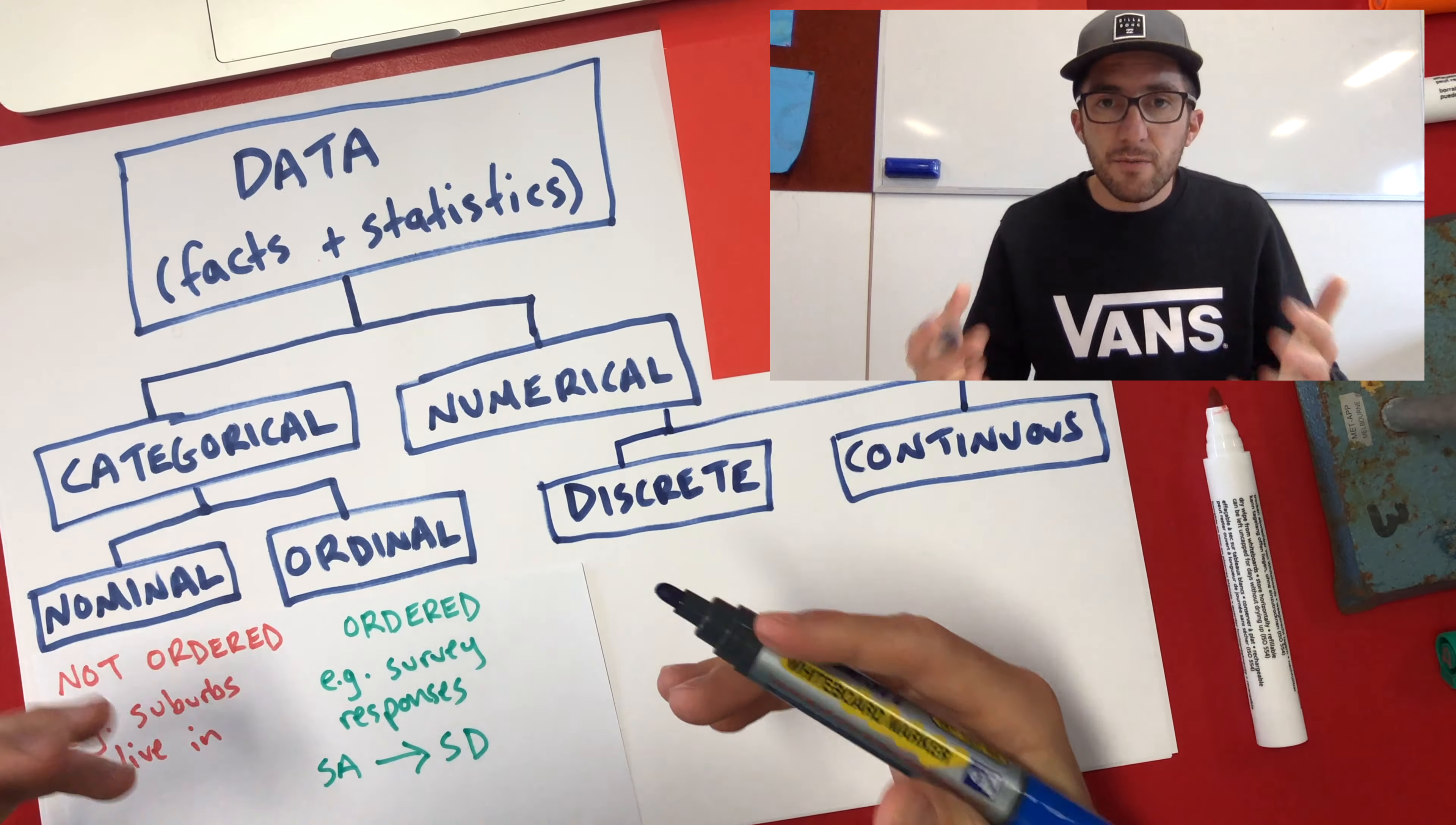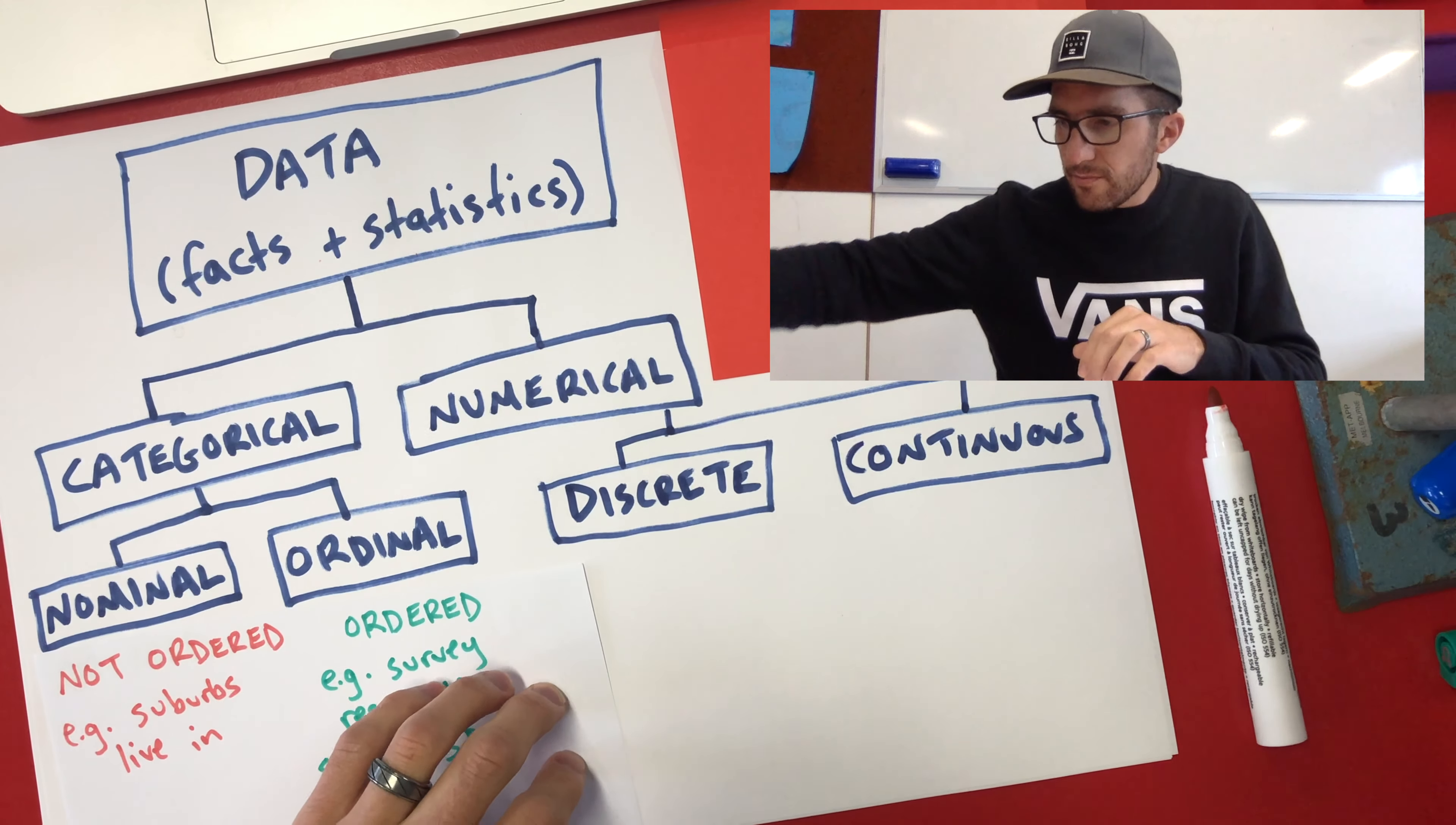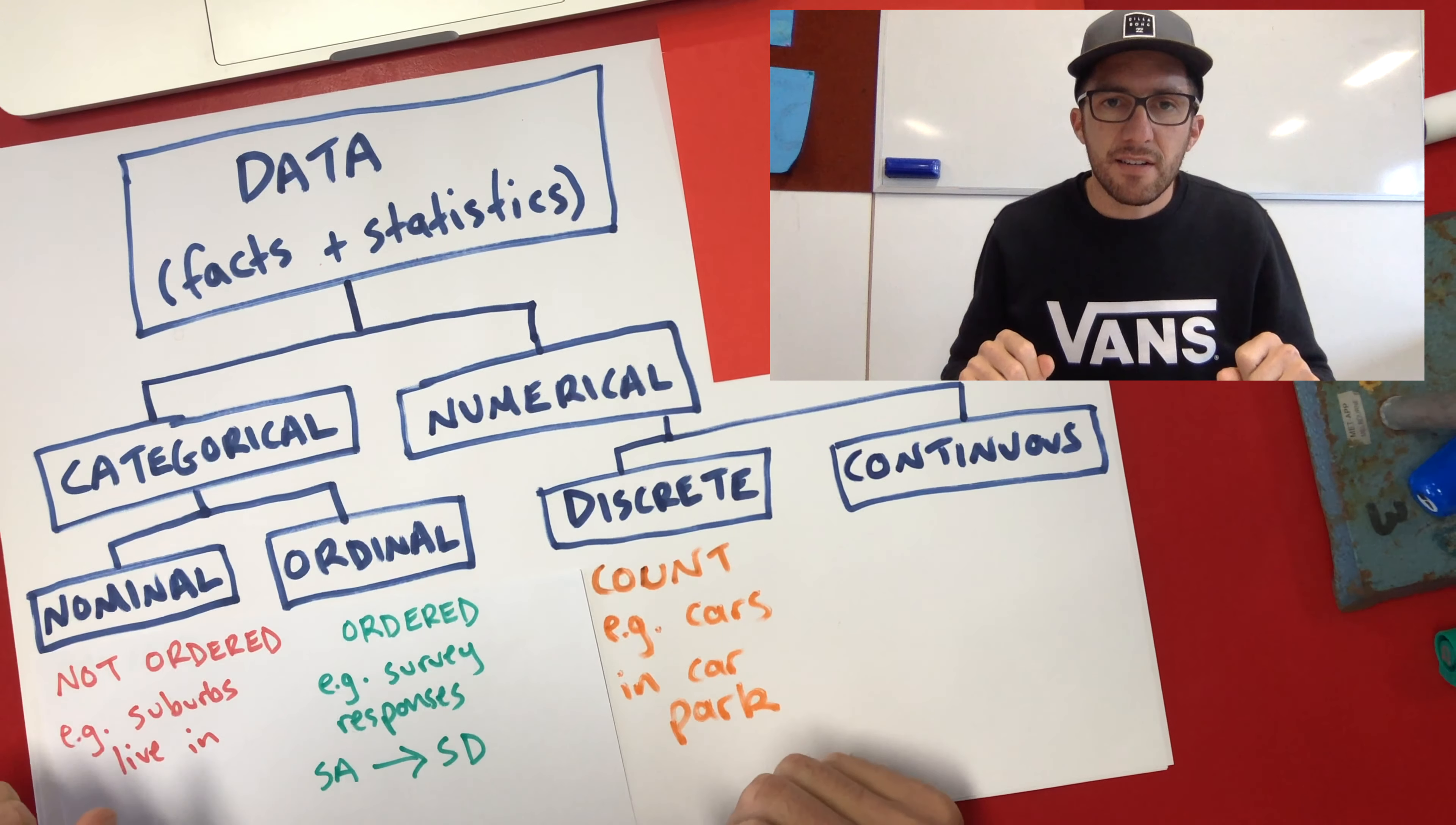So with discrete data, that's data that we count. And the discrete part of the name sort of means you're locked into certain numbers that you can choose. So if we're doing a survey of how many cars are in the staff car park, we only have certain numbers that we can have as our answers, like one car, three cars, ten cars, and so on. We can't have two and a half cars. We can't have 3.57 cars. We're locked into those whole numbers. So discrete data is data that we count. So we count, for example, cars in car park. So you can't have half a car, can you? And that relates to a whole bunch of other stuff too, particularly to do with people. So you can't have half a person.